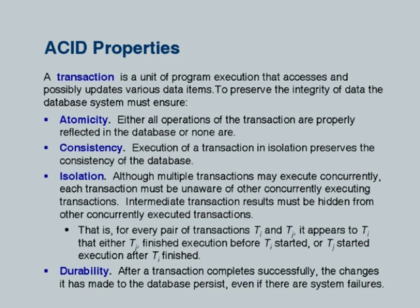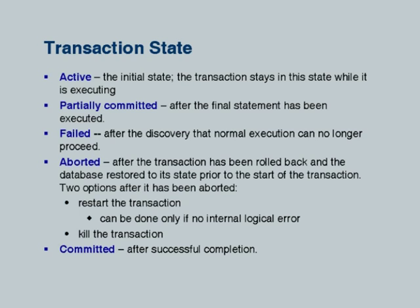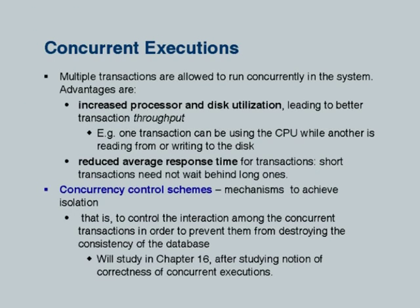We also know about transaction states. The transaction runs; when it finishes its last step it is partially committed, and then it tries to commit. When does it commit successfully? That depends on the recovery implementation — typically when a commit log record has been written; otherwise it fails and is aborted. We have already seen two reasons for concurrent execution to do with transactions waiting. There is a third reason: if a transaction is waiting for a disk IO, why not let a non-conflicting transaction use the CPU?